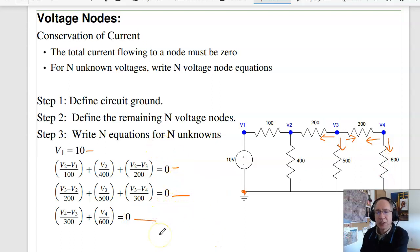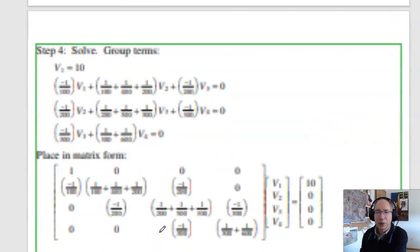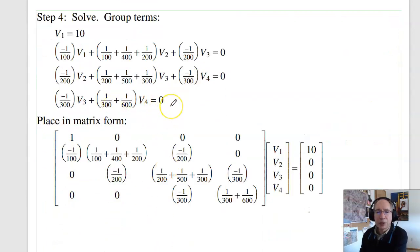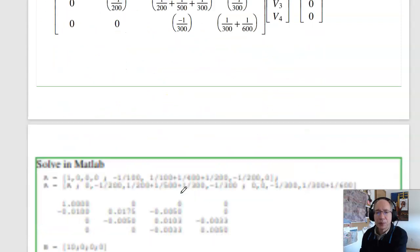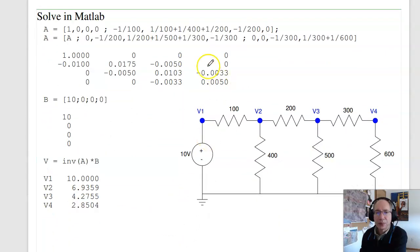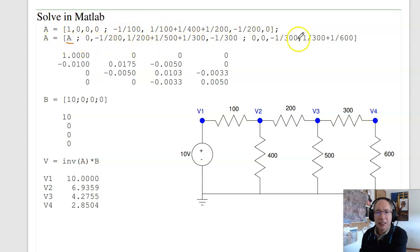Four equations, four unknowns. I group the terms, put in matrix form. In MATLAB, here's the first two rows, then add the third and fourth row, giving you the A matrix. B matrix, then voltage is inverse of A times B.